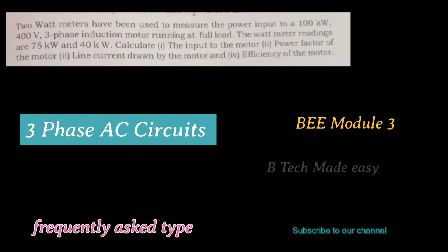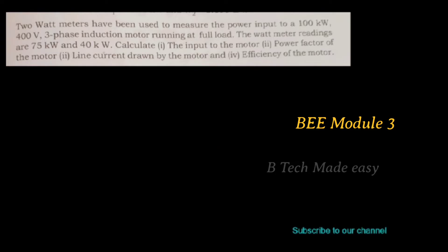Two watt meters have been used to measure the power input to a 100 kilowatt, 400 volt, three-phase induction motor running at full load. The watt meter readings are 75 kilowatt and 40 kilowatt. Calculate: (i) the input to the motor, (ii) the power factor of the motor, (iii) the line current drawn by the motor, and (iv) the efficiency of the motor.